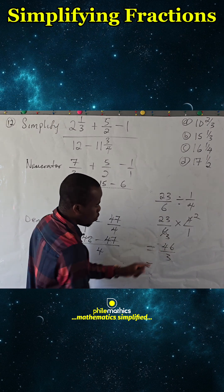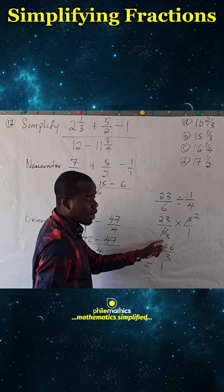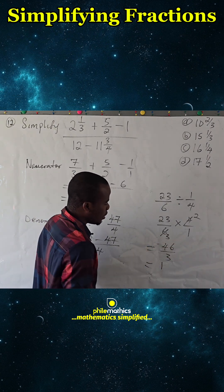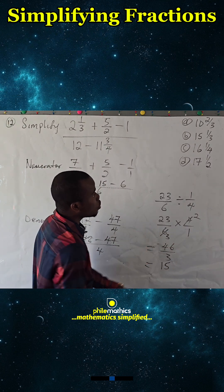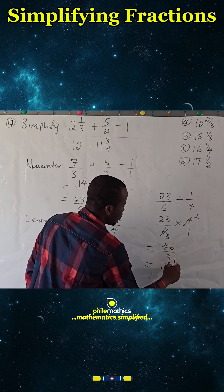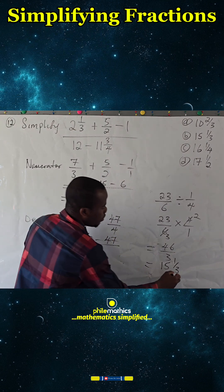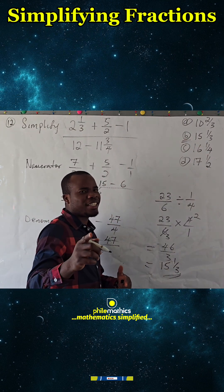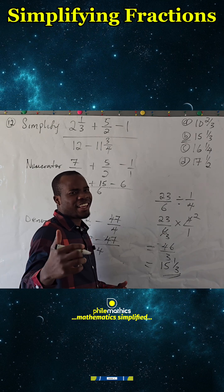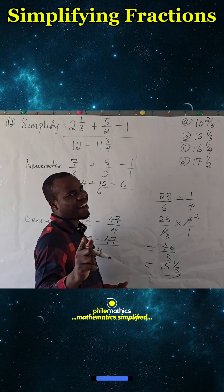Now 3 into 46 is 15 remainder 1, so this is 15 1/3. Thank you for watching. Make sure you like, share it, and subscribe. Bye!